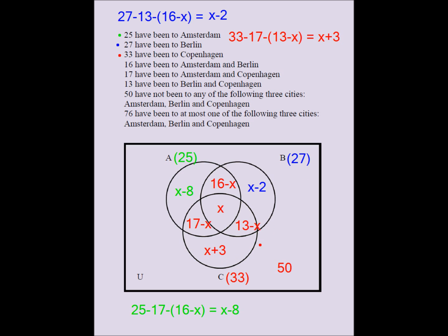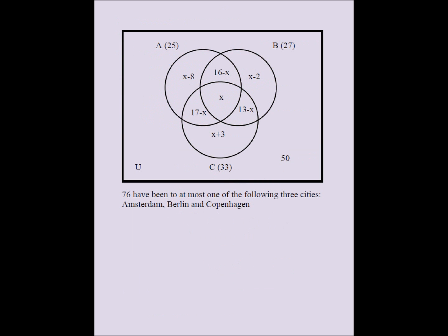Now the Venn diagram has all eight spots filled out in terms of x. The cleaned-up diagram shows: Amsterdam-only = x minus 8, Berlin-only = x minus 2, Copenhagen-only = x plus 3, Amsterdam∩Berlin only = 16 minus x, Amsterdam∩Copenhagen only = 17 minus x, Berlin∩Copenhagen only = 13 minus x, all three = x, and outside all = 50. The circle totals confirm 25, 27, and 33.